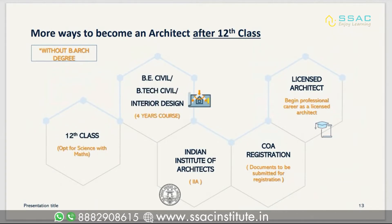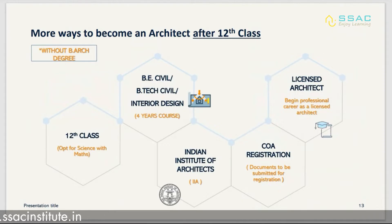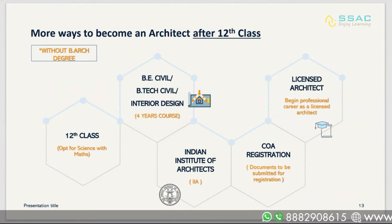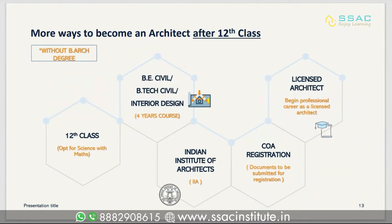If you want to become an architect after 12th class without a bachelor degree, you complete your 12th in Science, then pursue B.Civil, B.Tech Civil, or Interior Design courses of four years. After your degree, you register with IIA — Indian Institute of Architects — and complete your COA registration to become a licensed architect and begin your professional career.